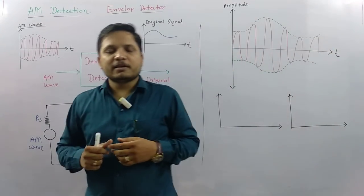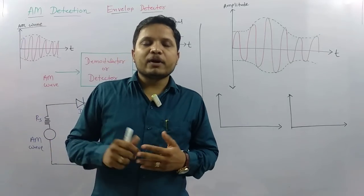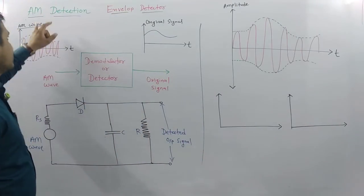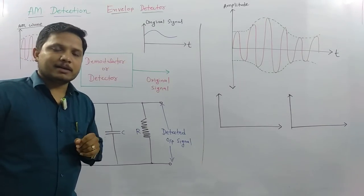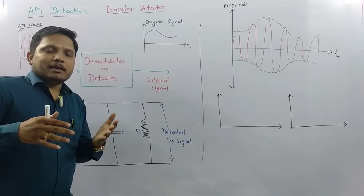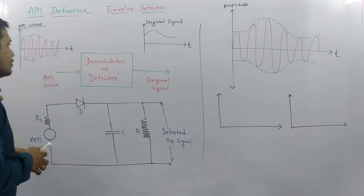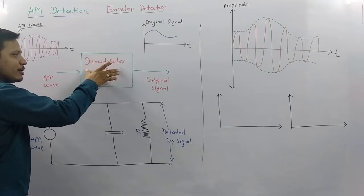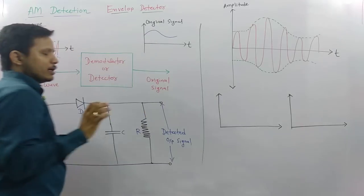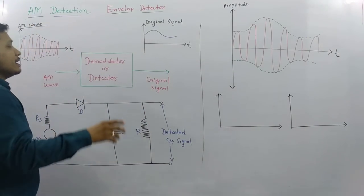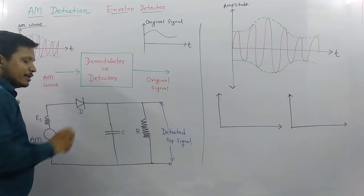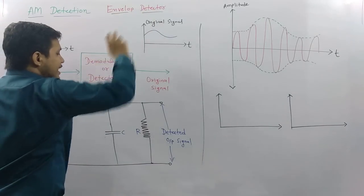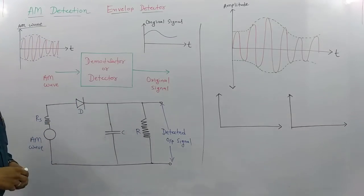Welcome to the communication engineering playlist. In this session, I will be discussing amplitude demodulation by envelope detector. In amplitude demodulation, we take an amplitude modulated signal and pass it through a detector or demodulator circuit to extract the original information. We will perform this amplitude demodulation using an envelope detector, and this is the basic circuit for an envelope detector.